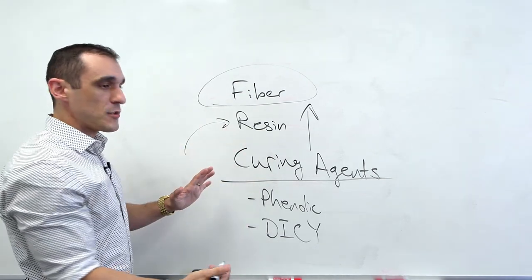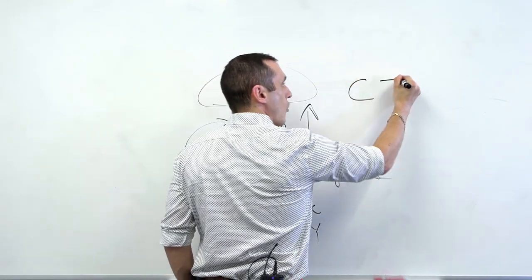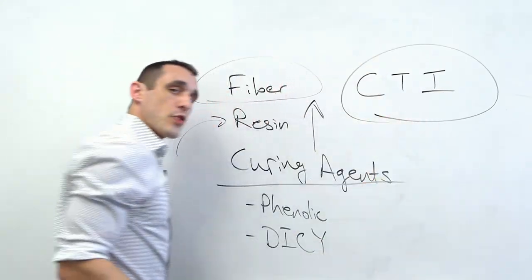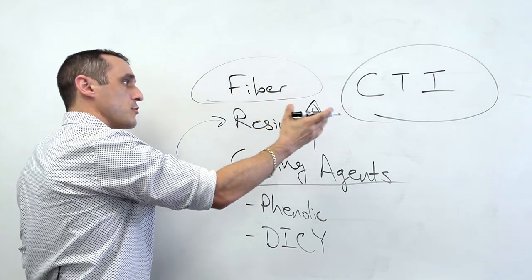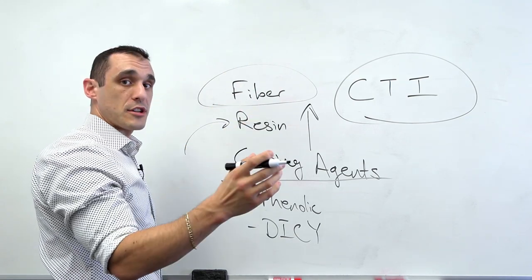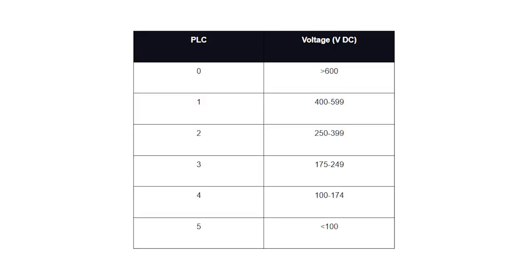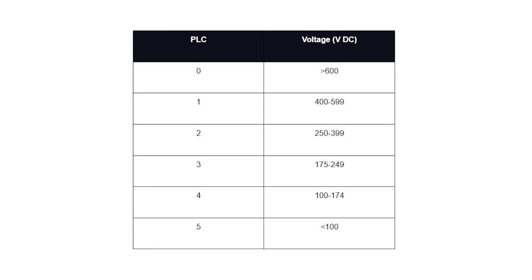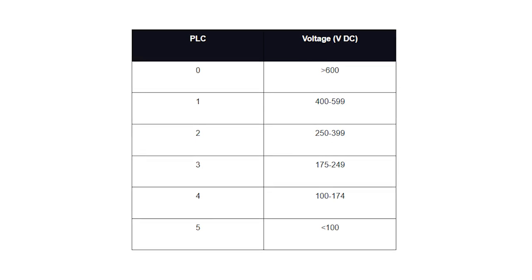Taken together, all of these materials then determine another important metric called the comparative tracking index or CTI. So the comparative tracking index is divided into different levels and different values are assigned to a comparative tracking index to delineate different appropriate voltage ranges where that material can be used. So I've got a table here I want to show you that delineates all of these different ranges. So the CTI assigns a performance level category or performance level classification numbered zero through five. So five corresponds to the lowest voltage, and then the lower numbers correspond to higher voltages. So it's an inverse scale.